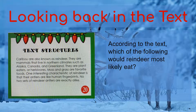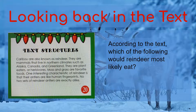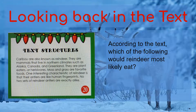Now let's look at the story about caribou, also known as reindeer. According to the text, which of the following would reindeer most likely eat? Let's look at the story. Caribou are also known as reindeer. They are mammals that live in northern climates such as Alaska, Canada, and Greenland. They're plant eaters or herbivores. Moss and grass are favorite foods. One interesting characteristic of reindeer is that their antlers are like human fingerprints — no two sets of reindeer antlers are exactly alike. Going back in the story, I can see they are plant eaters or herbivores, and moss and grass are favorite foods, so the answer I choose must be a plant.